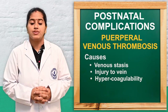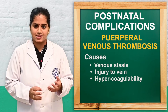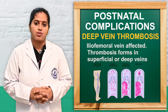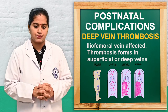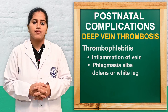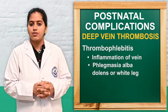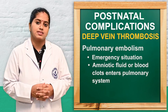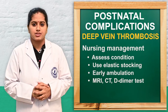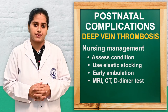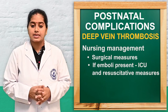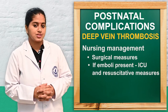The next condition is venous thrombosis, mainly due to venous stasis, injury to the vein, or hypercoagulability status during the postnatal period. The first type is deep vein thrombosis, mainly affecting the iliofemoral vein. Next is thrombophlebitis — inflammation of the veins. A complication called phlegmasia alba dolens can occur, forming a white leg in the woman. Pulmonary embolism is a serious emergency where blood clots move and enter the pulmonary system. Management includes assessing the woman, using elastic stockings, early ambulation, MRI, CT, and D-dimer tests. Surgical measures and ICU resuscitation are used in serious cases.